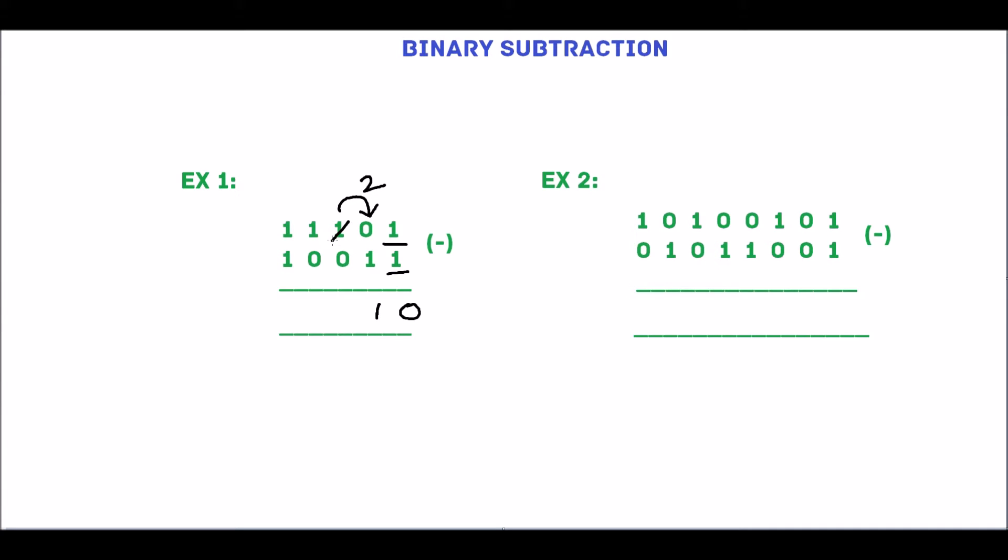1 has given the borrow, so it will become 0. 0 minus 0 is 0. 1 minus 0 is 1. 1 minus 1 is 0. 1010 base 2 is the answer.